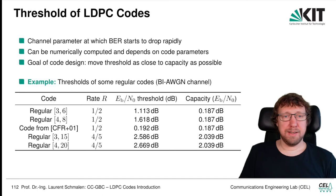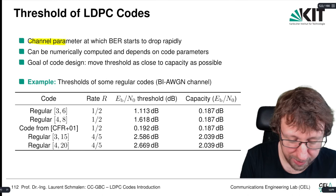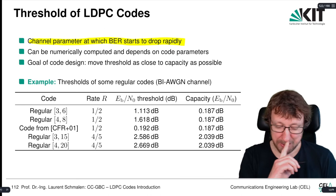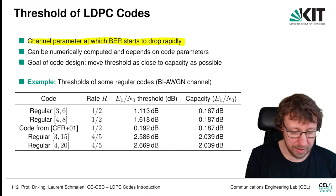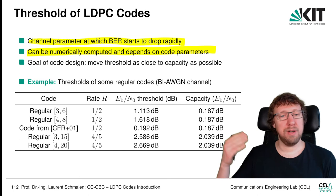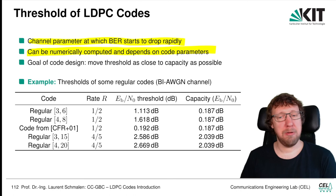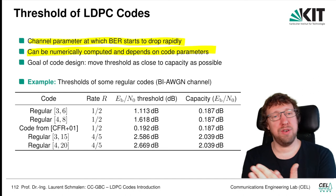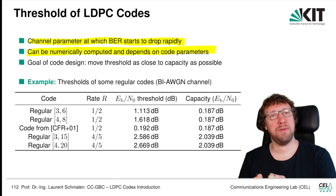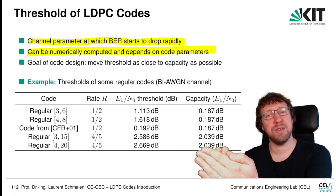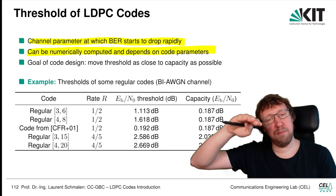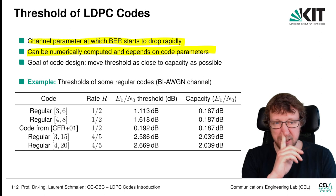The threshold is the channel parameter at which the BER starts to drop very rapidly. We can compute this threshold and it depends on the code parameters — this will be done in the next chapter. The goal of code design is to move this threshold as close to capacity as possible, which pushes the rapid-drop region as close to the channel capacity as possible.